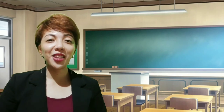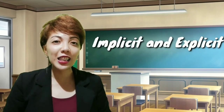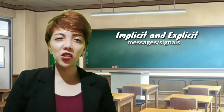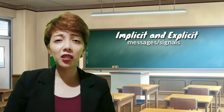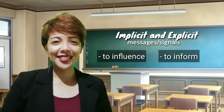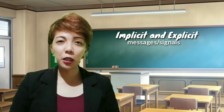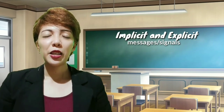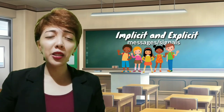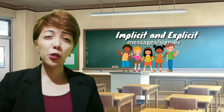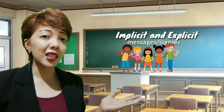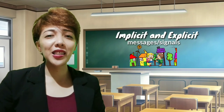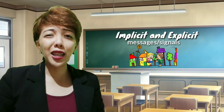Since we're done with those activities, it's time for us to know what implicit and explicit messages or signals are. Implicit and explicit messages are techniques used in various forms of media to influence and inform the audience. We see them on a daily basis in the media that we watch, listen to, and read. But we have to note that different people can find different meanings in the text — someone who grew up in a different part of the world with a different culture may find a different meaning, and someone who lives on the very same street as you might also find a different meaning.